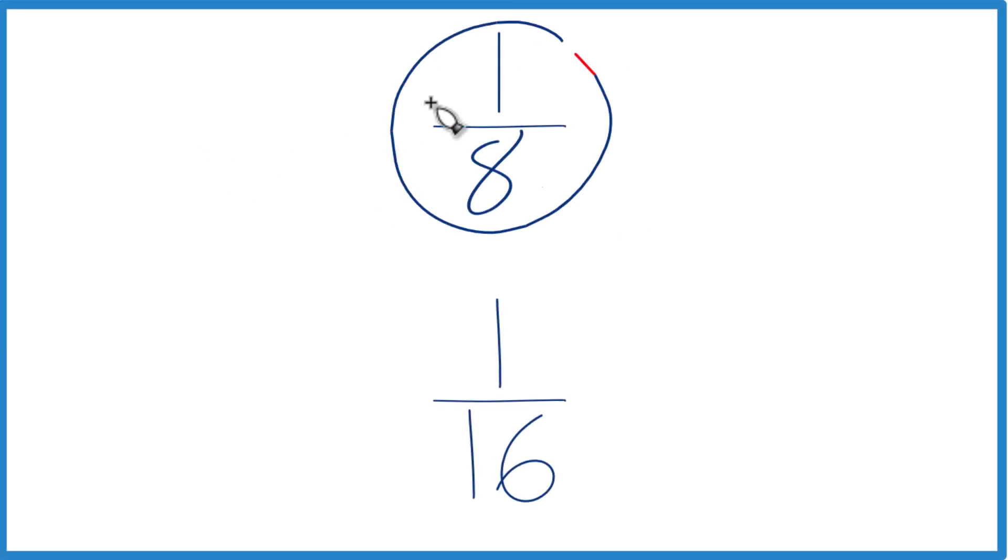So let's take a look at whether one-eighth is larger or smaller than one-sixteenth. And you might be able to reason this out. If you had one object, you divide it into eight pieces or sixteen pieces, these pieces would be bigger. One-eighth is greater than one-sixteenth. And you could check that on a calculator as well.